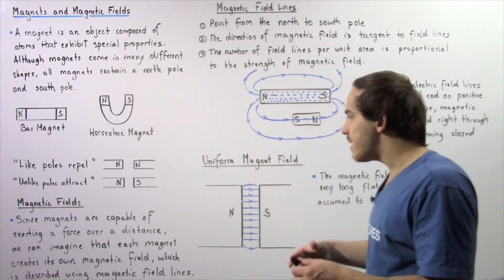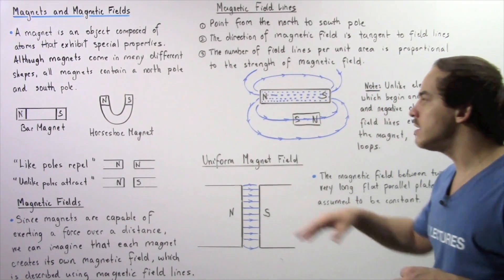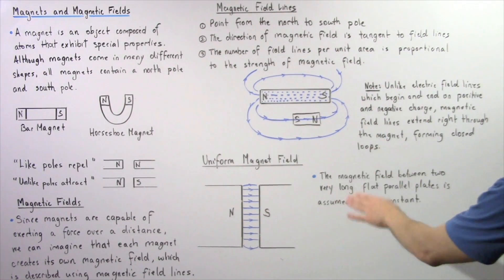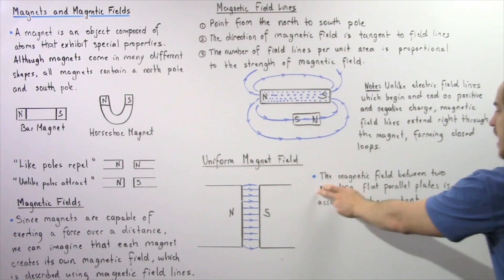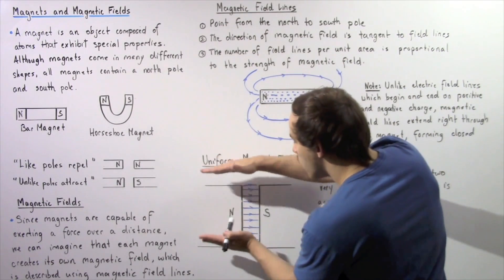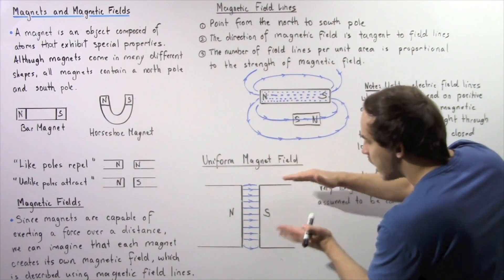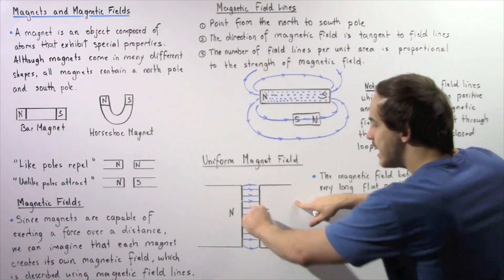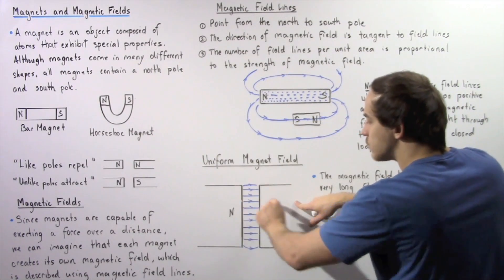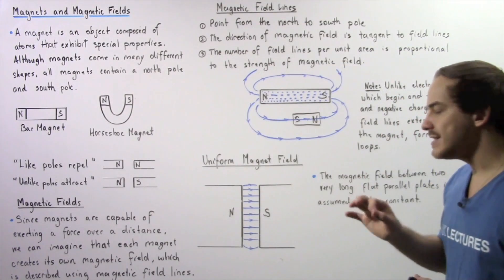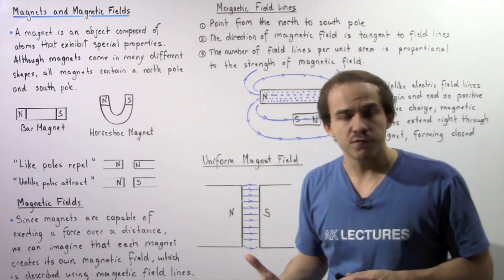In the same way that we can form a uniform electric field, we can also discuss a uniform magnetic field. The magnetic field between two very long and large flat parallel plates is assumed to be constant. So if we have a north pole and a south pole, and if the separation between the plates is much smaller than their size, the magnetic field between the two poles is assumed to be uniform.